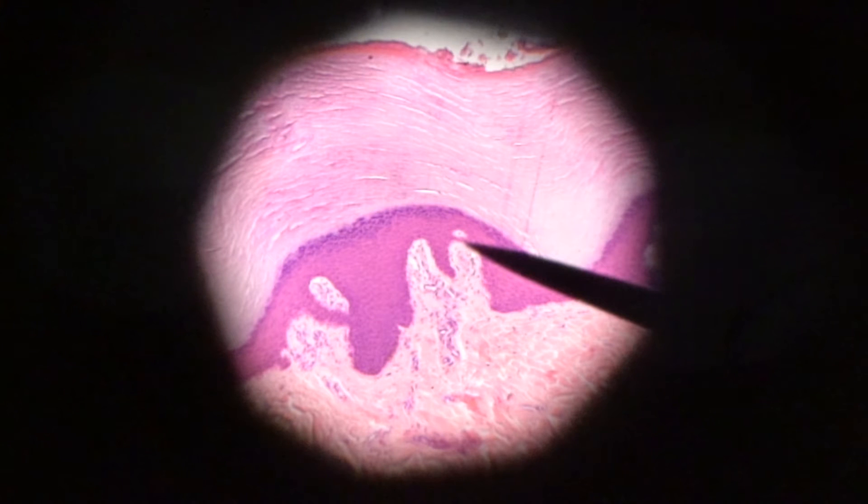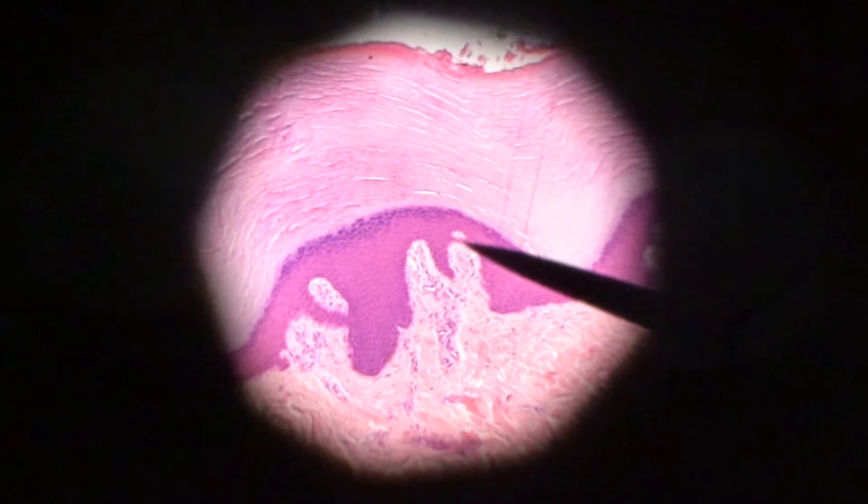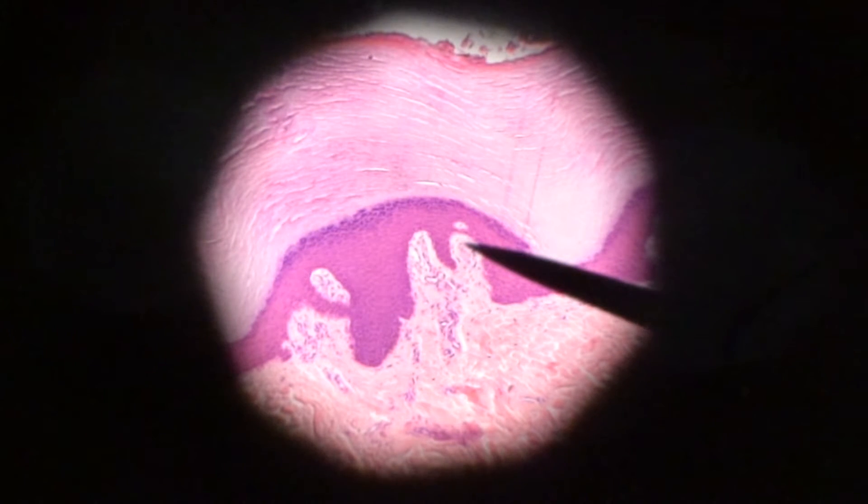And right below that inside the papillae, or papilla for singular, is your Meissner tactile corpuscle that's going to be used for light touch and pressure.